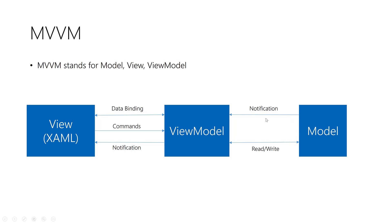The ViewModel is a class that contains properties and methods that wrap the view logic. For example, I have a view for a login window. The login window contains two text boxes — one for entering the username or email and the second for the password — and a button to invoke the login function. In the ViewModel I have two string properties, username and password, and a function called login.